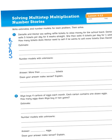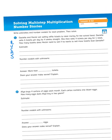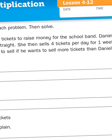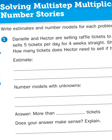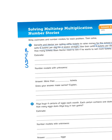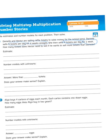Danielle and Hector are selling raffle tickets to raise money for the school band. Danielle sells five tickets per day for four weeks straight. She then sells four tickets per day for one week. How many tickets does Hector need to sell if he wants to sell more tickets than Danielle? Let's reread this and as I read it let's underline the question and circle the important information.